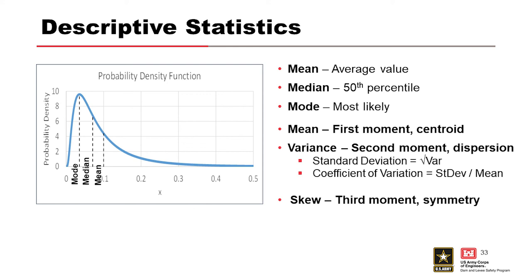Different ways to describe random variables: Central tendency includes the mean (average), median (50th percentile — 50% above and 50% below), and mode (most likely — the highest point on the probability density function). Variance, the second moment, describes the spread of the data. Standard deviation is the square root of the variance, and the coefficient of variation is the standard deviation divided by the mean. Skew, the third moment, measures asymmetry — a positive skew means the distribution has a long tail to the right.